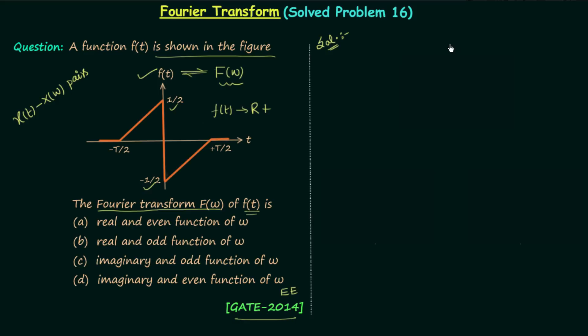We will take the waveform of signal f(t) and perform the operation time reversal. In time reversal operation we flip the signal waveform about the y axis. After performing the time reversal you will have the waveform like this, where t will be replaced by minus t. So we will have f(-t) as our function.